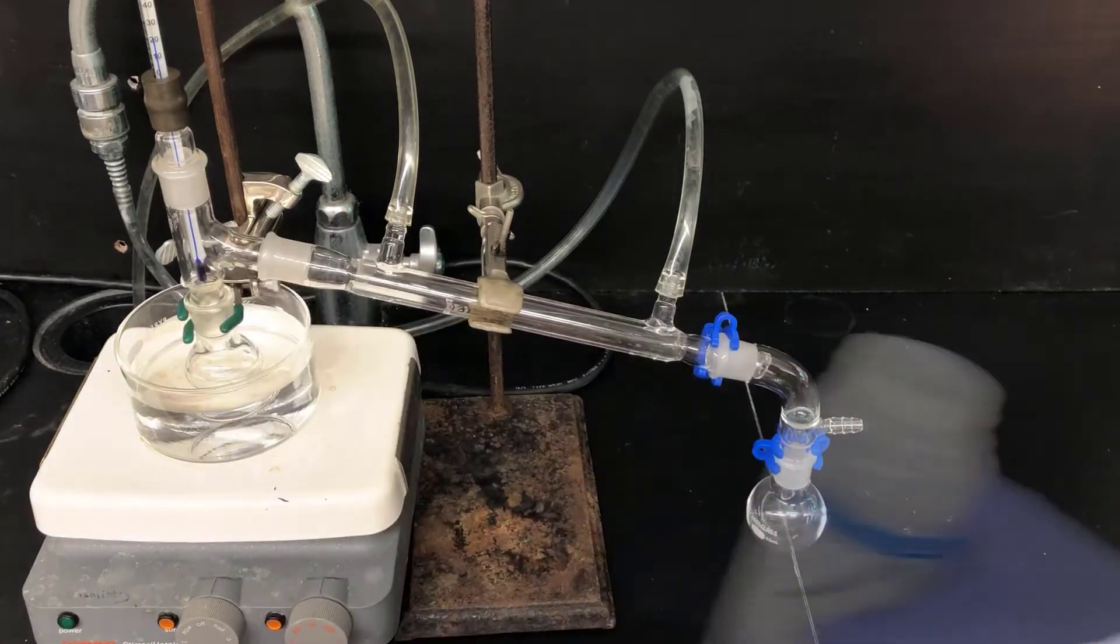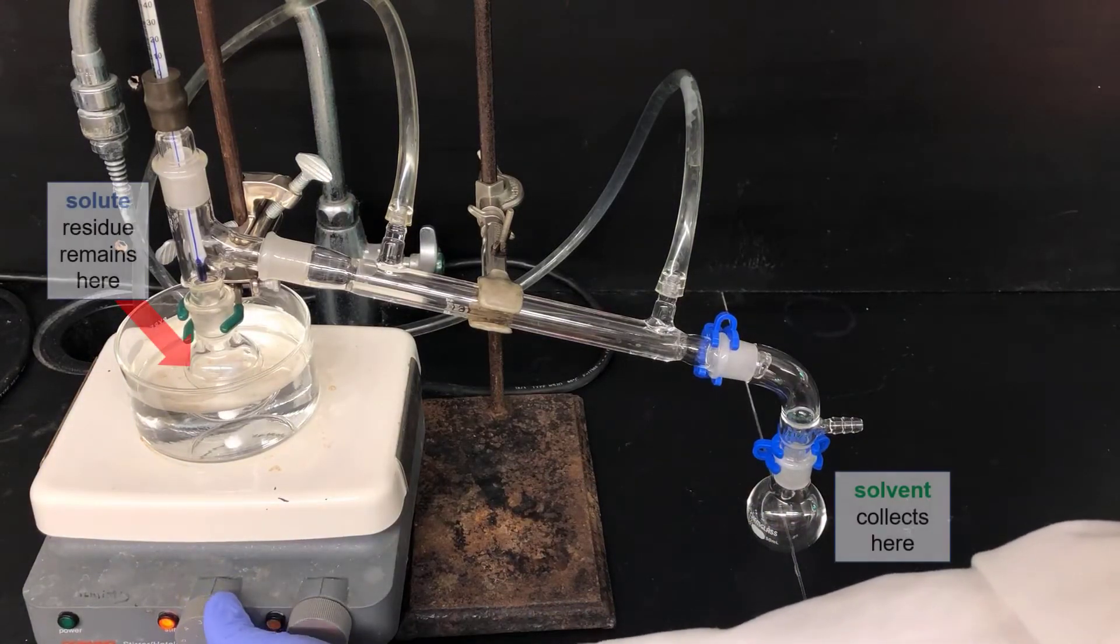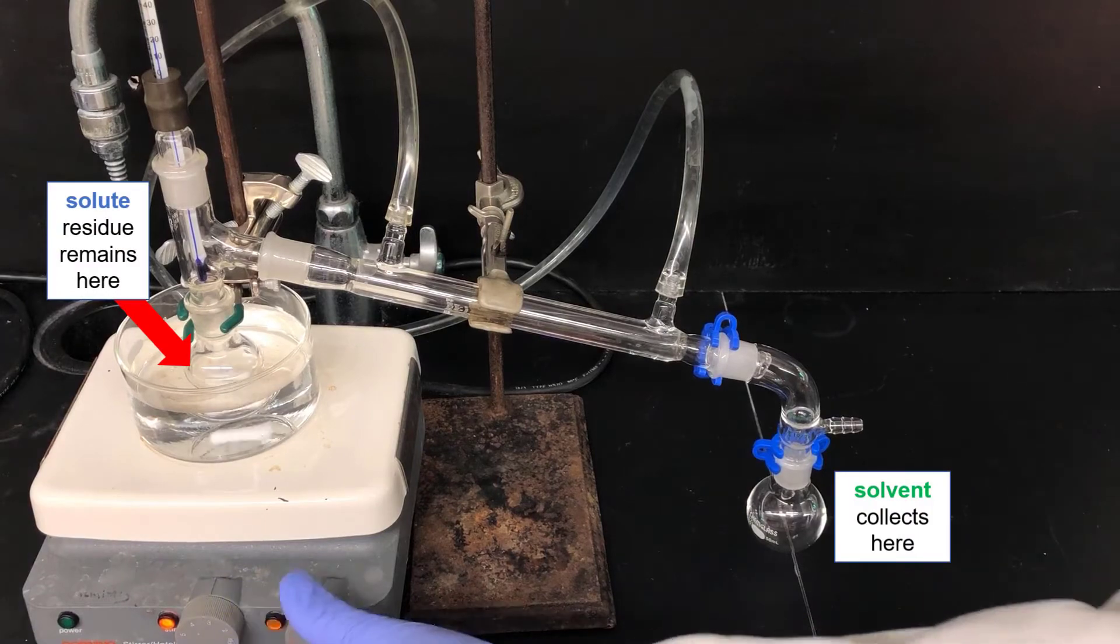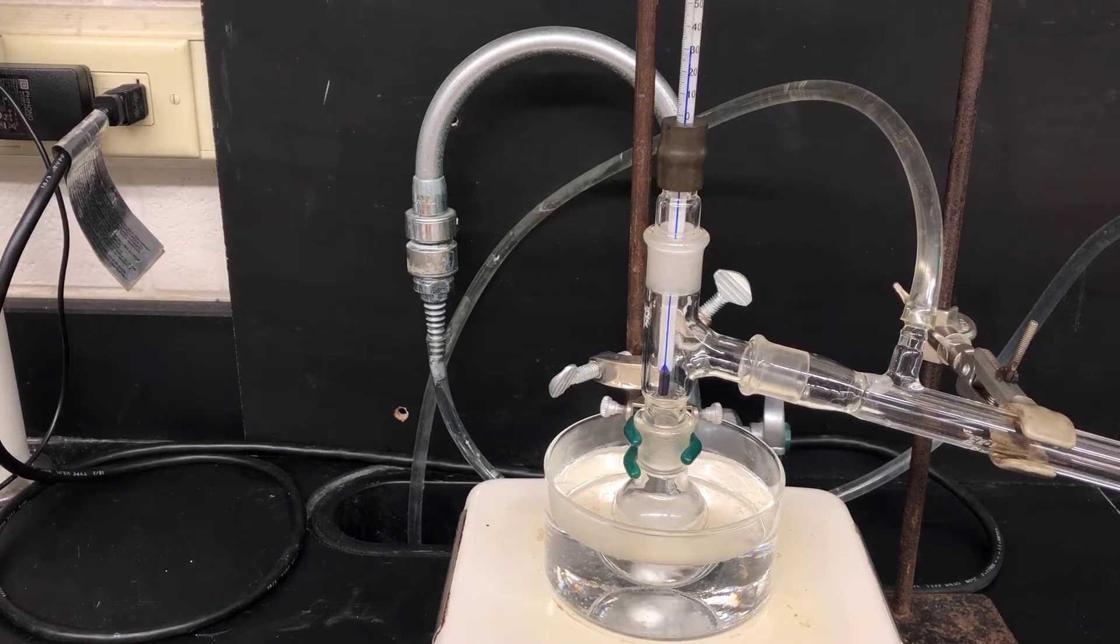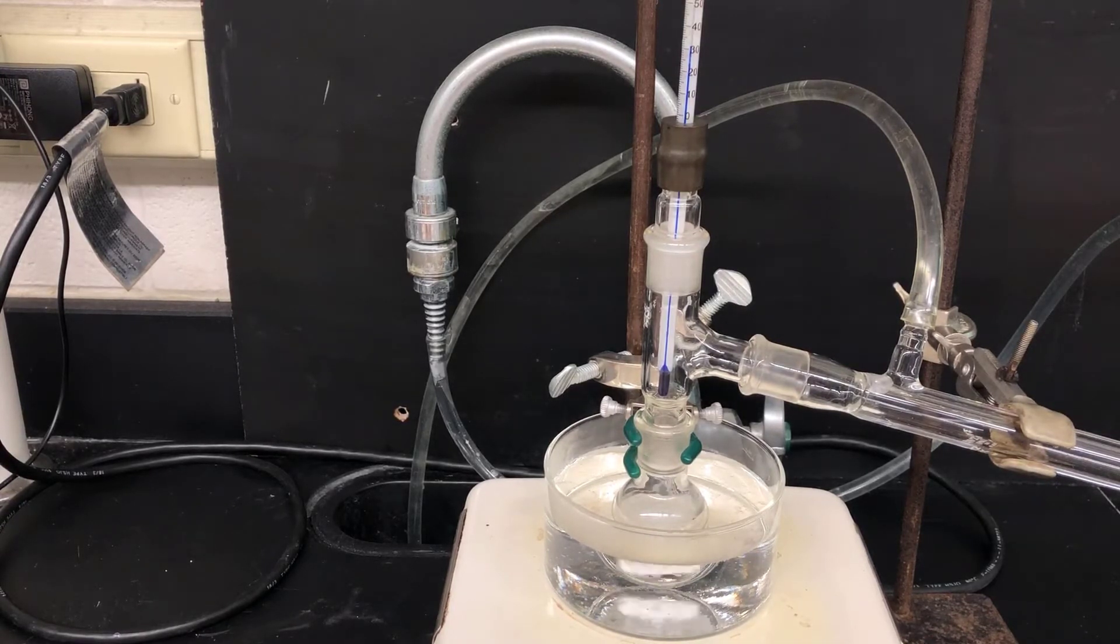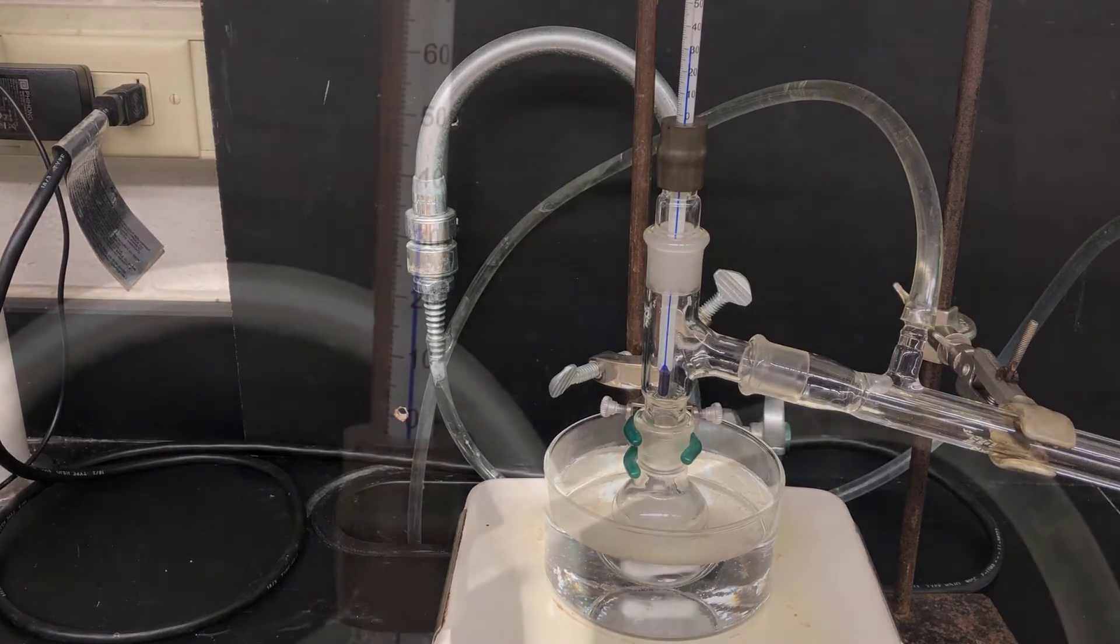So the solvent will distill over, and the solute will remain as a residue in the distillation flask on the left. Now I'm stirring the solution and heating the water bath. Now the solution is boiling, and the hot vapor has risen in the apparatus to touch the thermometer, causing the temperature on it to begin to rise. Watch this temperature carefully, because it gives you the boiling point of the unknown solvent.